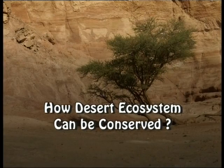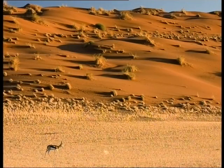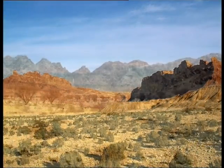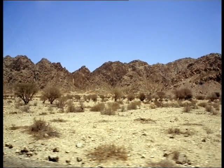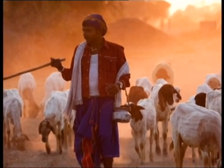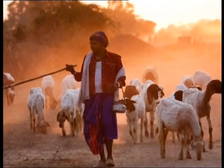How can the desert ecosystem be conserved? The desert ecosystem is extremely sensitive. Its ecological balance — which forms the habitat for its flora and fauna — is very easily disturbed. Desert people have traditionally protected their meager water resources.